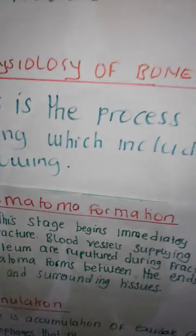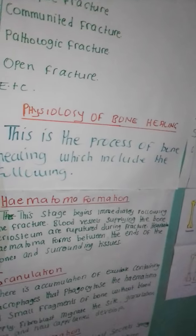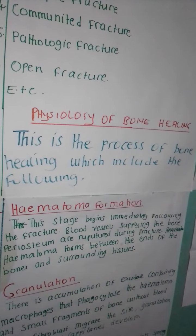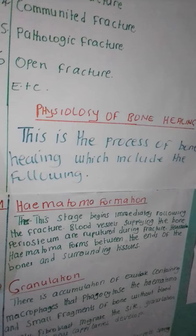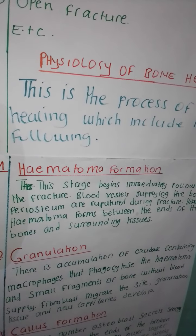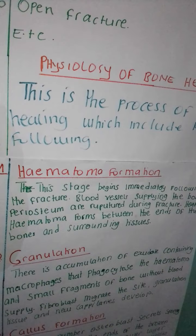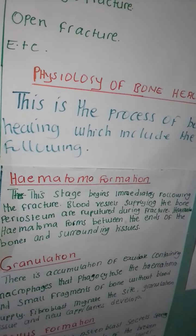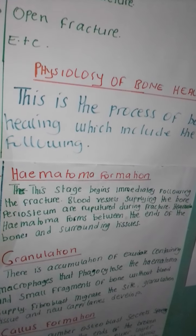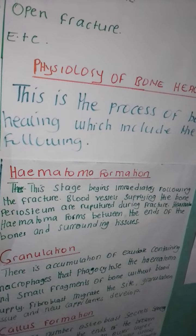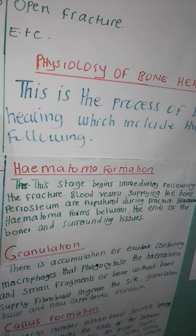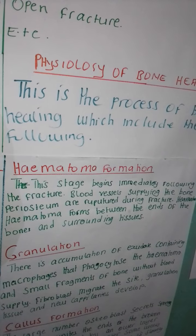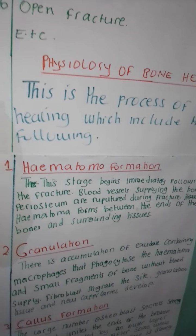Now, the physiology of bone healing. This is a process which includes the following stages. Number one: hematoma formation. This stage begins immediately after the fracture occurs. Blood vessels supplying the bone and the periosteum are ruptured during the fracture, and a hematoma forms between the ends of the bones and surrounding tissues.